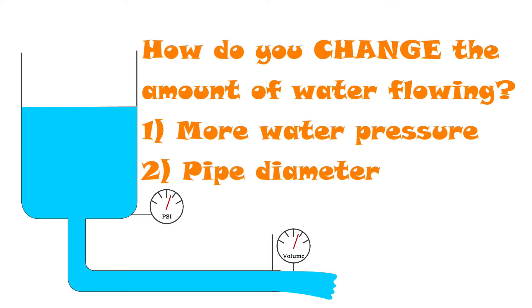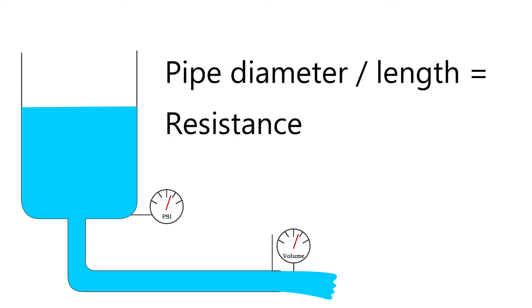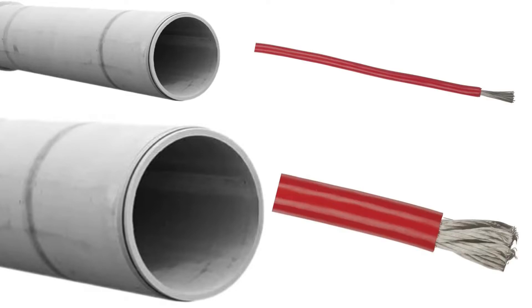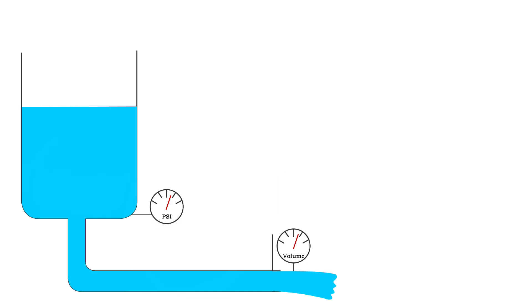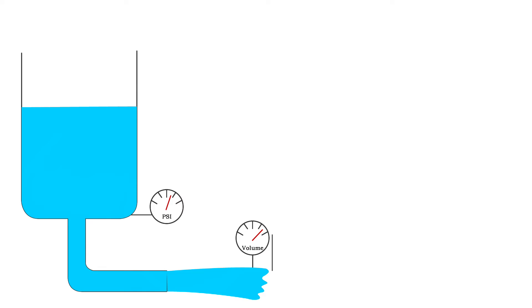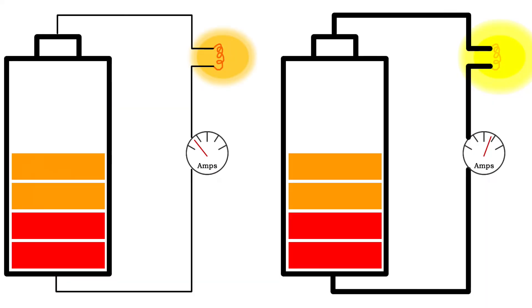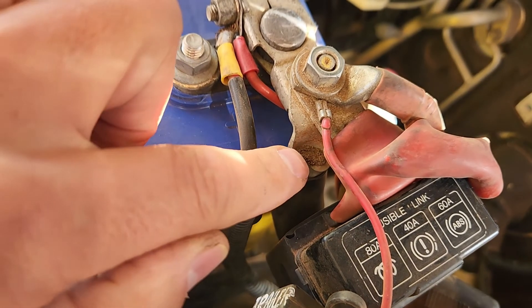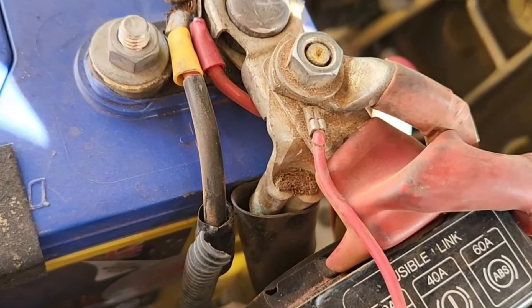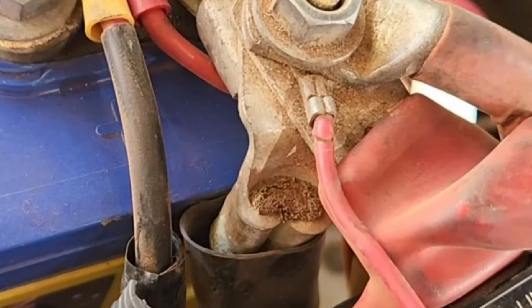And this is our third electrical property: resistance. The diameter and length of the pipe is the equivalent of electrical resistance. A larger diameter pipe is just like a thicker electrical cable — it allows more current to flow for the same amount of voltage. This is why the wires from your car battery to the starter motor are so much thicker than those going to the headlights. Traditional halogen headlights might draw 6 or 7 amps, but the starter motor draws over 100 amps, so those wires have to be a lot thicker.